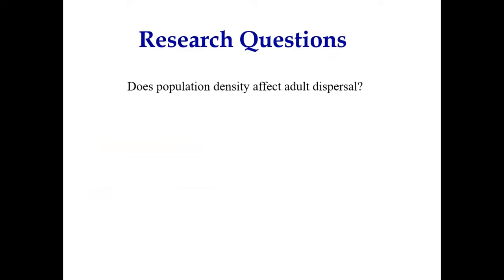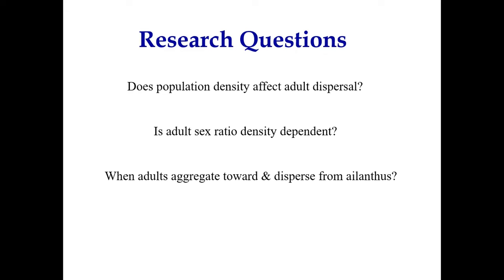The research questions are: Does population density affect adult dispersal? Is adult sex ratio density dependent? When do adults aggregate and then disperse from tree of heaven? And what is the potential impact of those findings on management strategies?